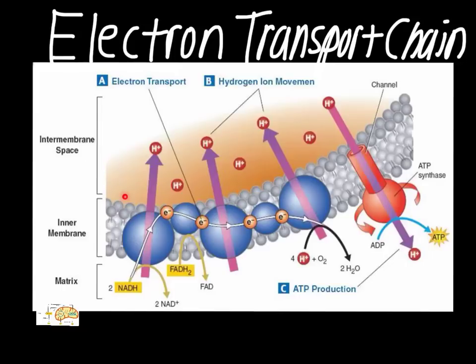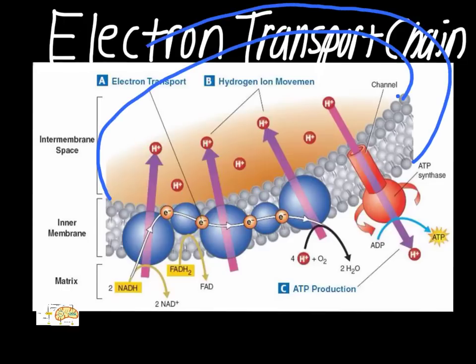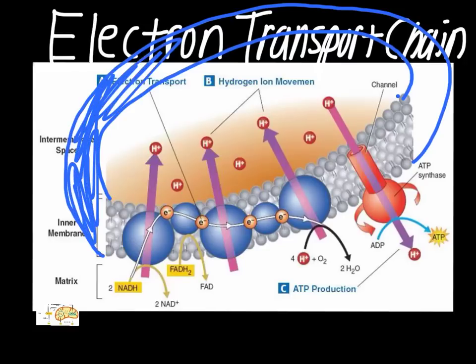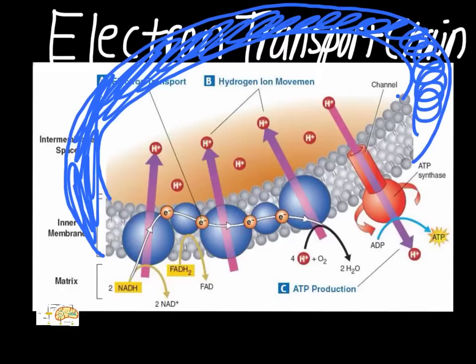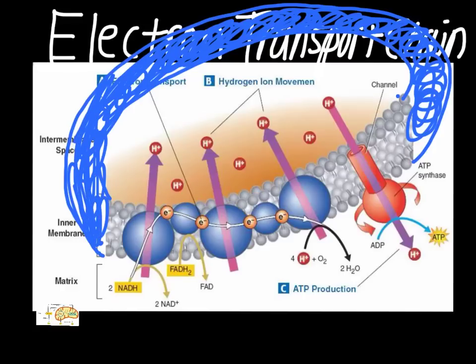There's space on the inside where these hydrogens will eventually be trapped, just like they were trapped last chapter. You have to think about this whole thing as extending around on either side, so it fills in and these hydrogens are trapped inside of the membrane. They can't go anywhere except out through the ATP synthase structure at the end.